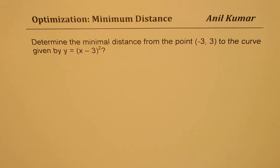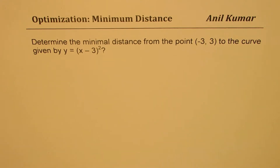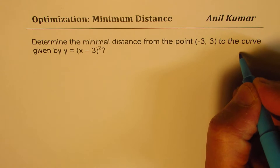I am Anil Kumar sharing with you an excellent question based on optimization. We will try to find the minimum distance from a point to a curve. The question is: determine the minimum distance from the point (-3, 3) to the curve given by y equals (x minus 3) squared. You can pause the video, answer the question, and then look into my suggestions.